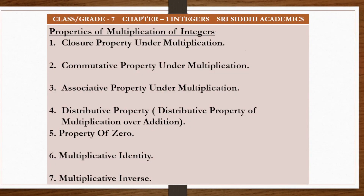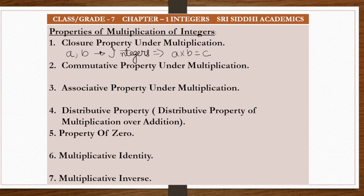Now let's understand the properties associated with multiplication of integers. All those properties which held good for addition will also work for multiplication. Closure property under multiplication means: if two integers a and b are multiplied, then whatever product comes will also be an integer. If a × b = c, then c will also be an integer.